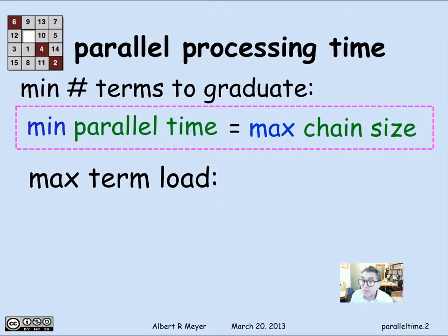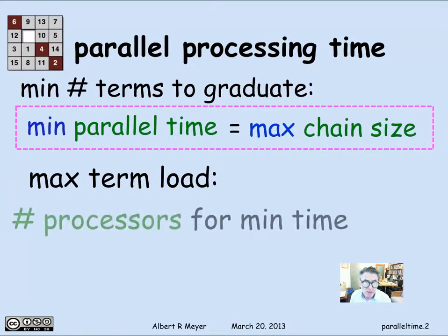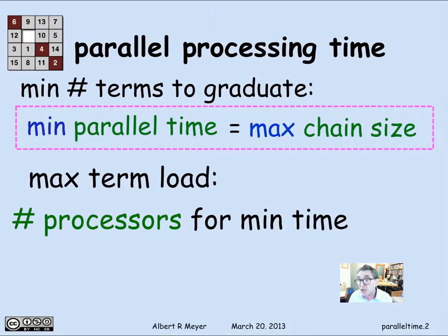What about the maximum term load? That corresponds to the number of processors you need to be doing tasks in parallel. For the course scheduling example, it means how many subjects you can take in one term. If you were doing computations, it would mean how many separate CPUs you would need. That's an upper bound on the number of processors needed to fully utilize the parallelism.